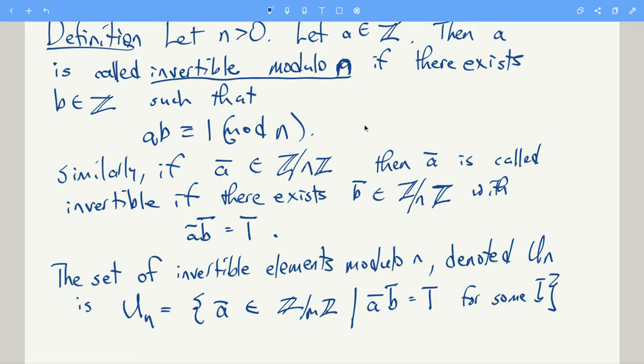Just to give you a quick example, we were working with modulo 5 in the last video a little bit. So notice that 2 times 3 is congruent to 1 mod 5. Therefore, we'll say that 2 is invertible modulo 5. Also, the same congruence tells us that 3 is invertible modulo 5.